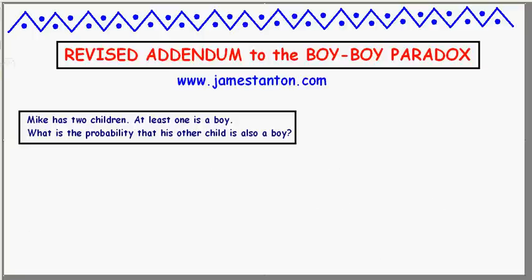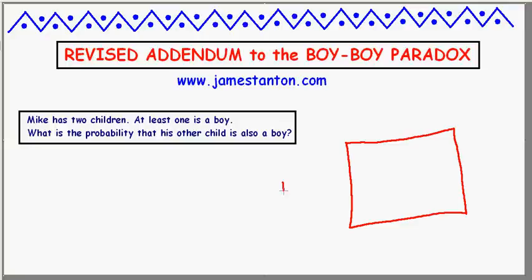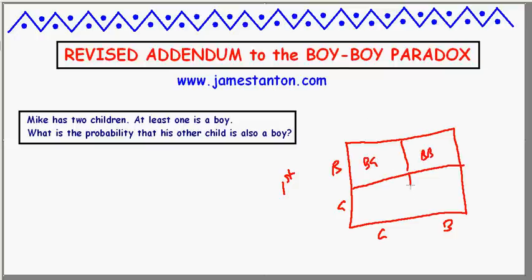Let me first draw a big square that represents the universe of all people with two children. Of those people, half will have a boy as their first child and half will have a girl. Of those with a boy as their first child, half will have a girl as their second child and half will have a boy — so these are the boy-girl people and these are the boy-boy people. Amongst those with a first child that's a girl, half will have a girl as the second child and half will have a boy.